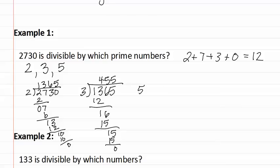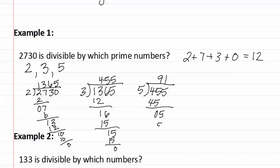Now we use the five. Five goes into 455. Five goes into forty-five nine times, and five goes into five once. We now have the number ninety-one remaining after we have divided out two, three, and five.